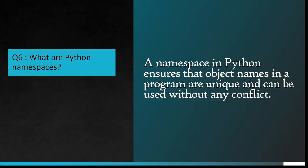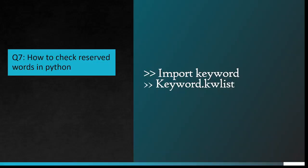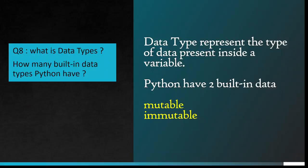Question number 7: How to check reserved words in Python? Import keyword, keyword.kwlist. Question number 8: What is data types? How many built-in data types Python have? Data type represents the type of data present inside a variable. Python has two built-in data types: Mutable and Immutable.